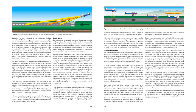The rudder serves the same purpose on the ground as it does in the air — it controls the yawing of the airplane. The effectiveness of the rudder is dependent on the airflow, which depends on the speed of the airplane. As the speed decreases and the nose wheel has been lowered to the ground, the steerable nose wheel provides more positive directional control. The brakes of an airplane serve the same primary purpose as the brakes of an automobile — to reduce speed on the ground. In airplanes, they are also used as an aid in directional control.